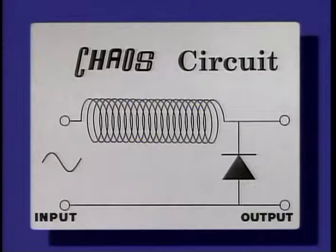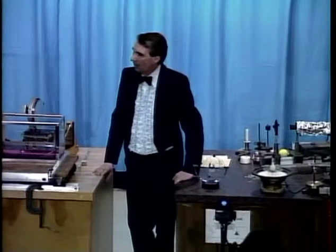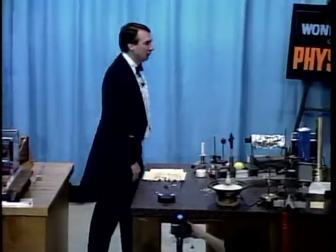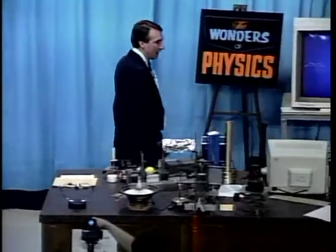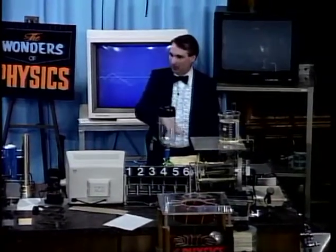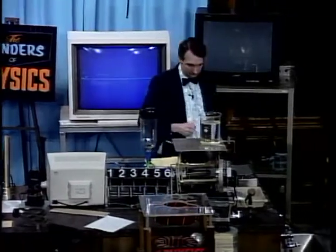At the input of this circuit, we make a sine wave — a voltage that's like the sine waves we were showing you — and at the output comes chaos. It's truly amazing that circuits do this, and in fact we can also explore the transition from periodic to chaotic behavior in this circuit.